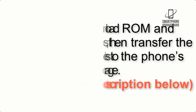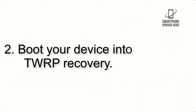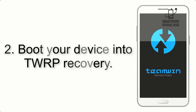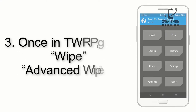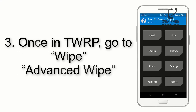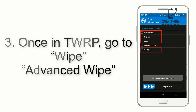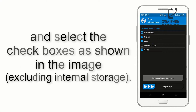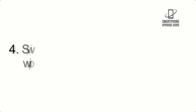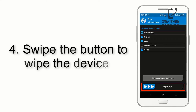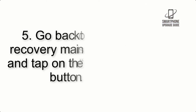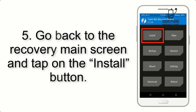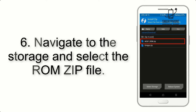Step 2: Boot your device into TWRP recovery. Once in TWRP, click on Wipe, then Advanced Wipe, and select the checkboxes as shown in the image, excluding internal storage. Step 4: Swipe the button to wipe the device. Step 5: Go back to the recovery main screen and tap on the Install button.